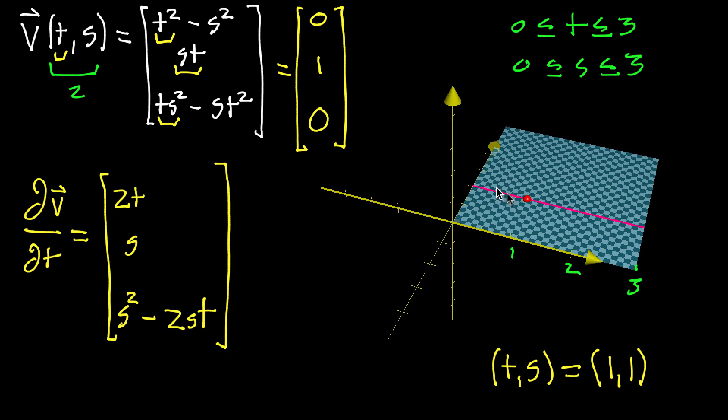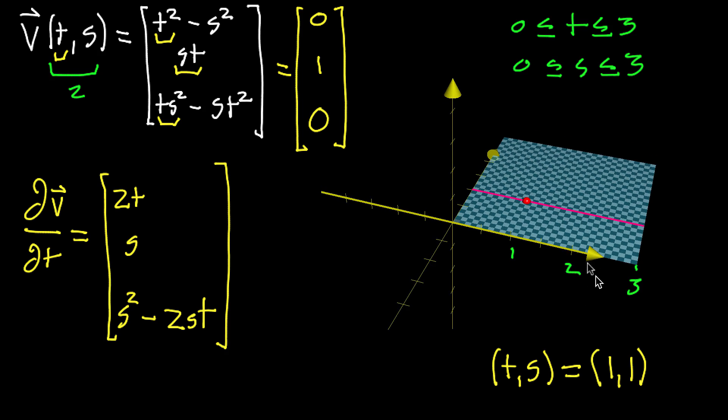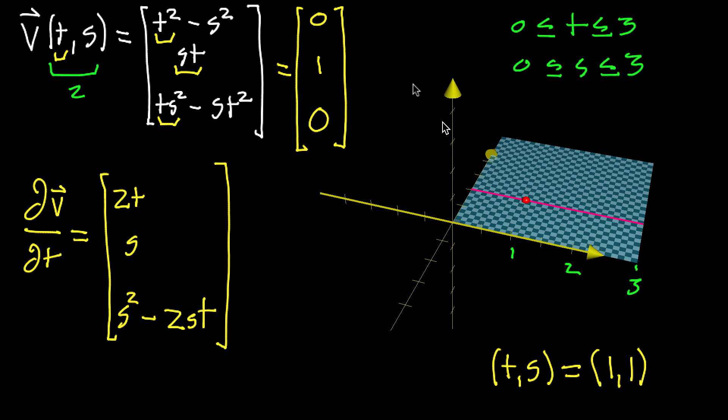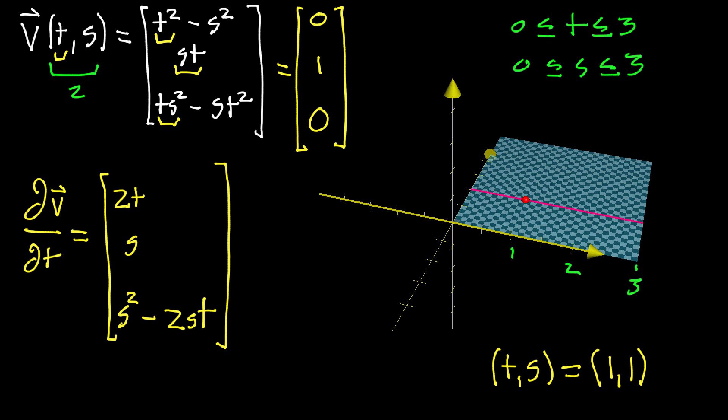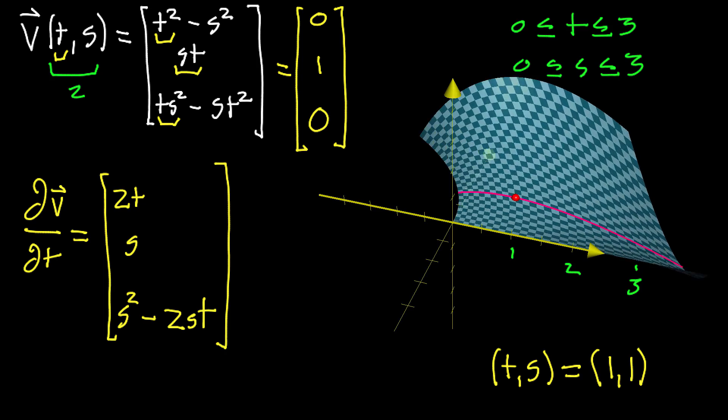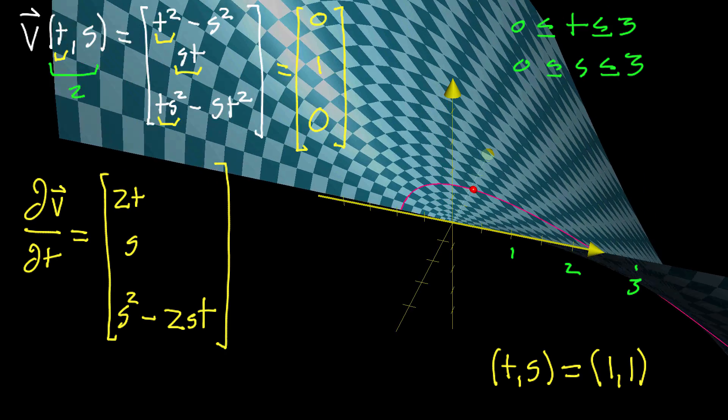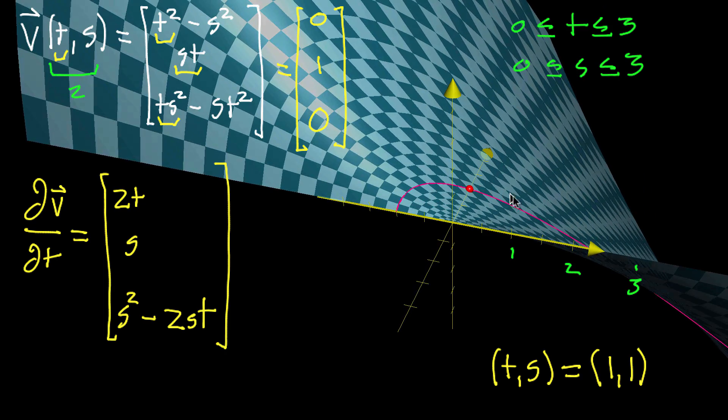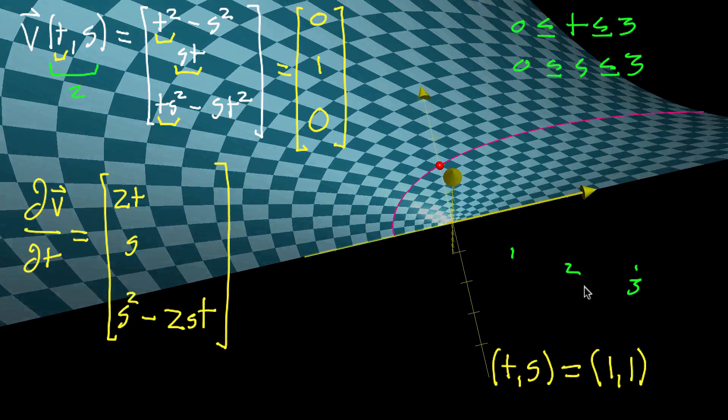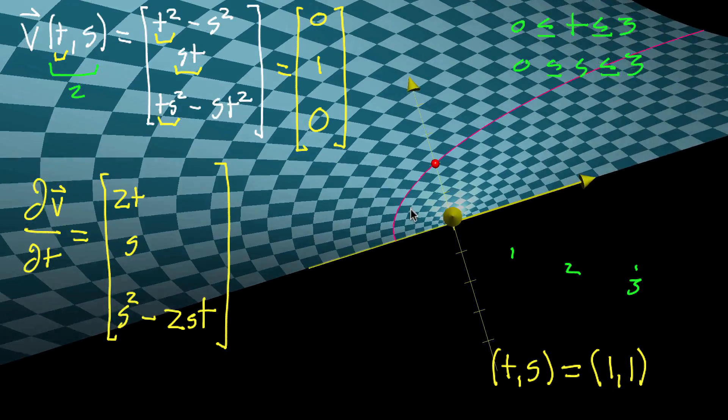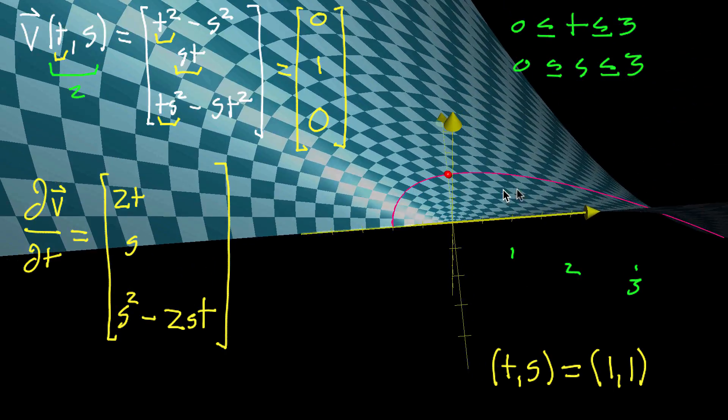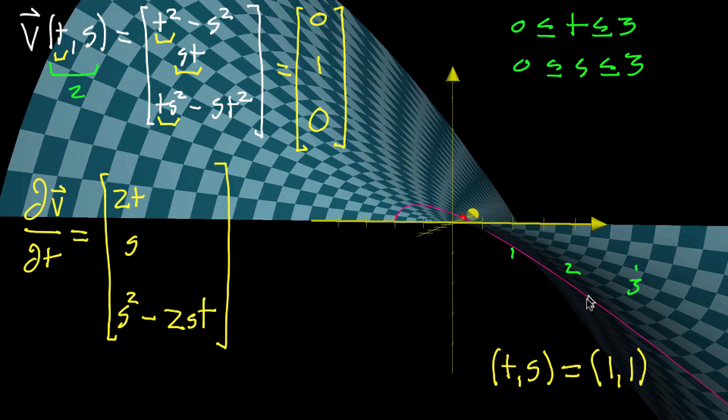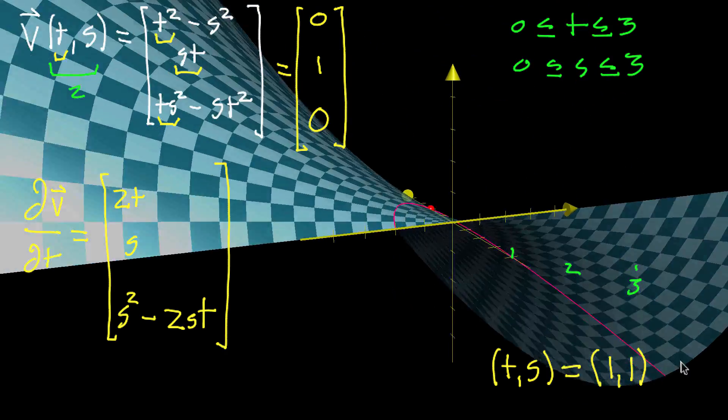And if we watch how this gets transformed under the transformation, under the mapping to the parametric surface, you can get a feel for what varying the input t does in the output space. So this whole pink line is basically telling you what happens if you let s constantly equal 1, but you let the variable t, the input t, vary freely, and you get a certain curve in three-dimensional space.